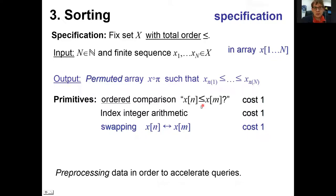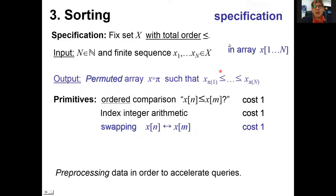The operations we'll use are: ordered comparison between two elements given their indices, some integer arithmetic on those indices, and a swapping operation. We don't use direct assignments — only swapping — to ensure the result is always a permutation. If we assign carelessly, we could create repeated entries or remove entries from the input array; sticking to swapping guarantees a valid permutation.